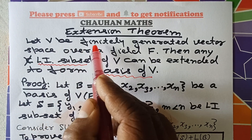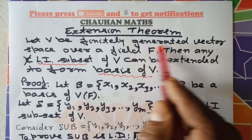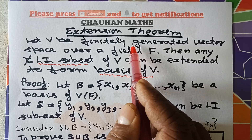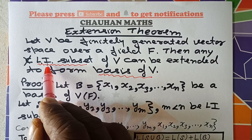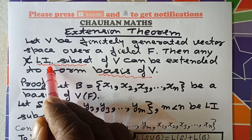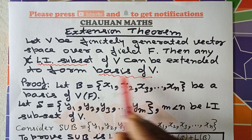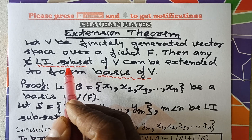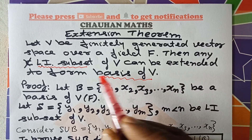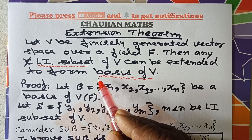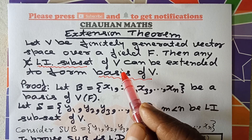Let V be a finitely generated vector space over a field F. Since V is finitely generated, its basis will have a finite number of elements. Then any LI (linearly independent) subset of V can be extended to form a basis of V. This theorem is called the Extension Theorem — a very important theorem.